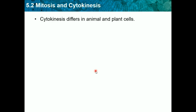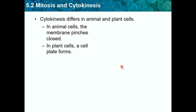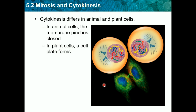Now we have cytokinesis, which differs slightly between animal and plant cells. In animal cells, the membrane pinches closed and they separate into two daughter cells. In plant cells, a cell plate forms instead. Because plant cells have cell walls, they're strong and sturdy, so a plate forms right between the two sides where the gap was — that's how it splits in plant cells.